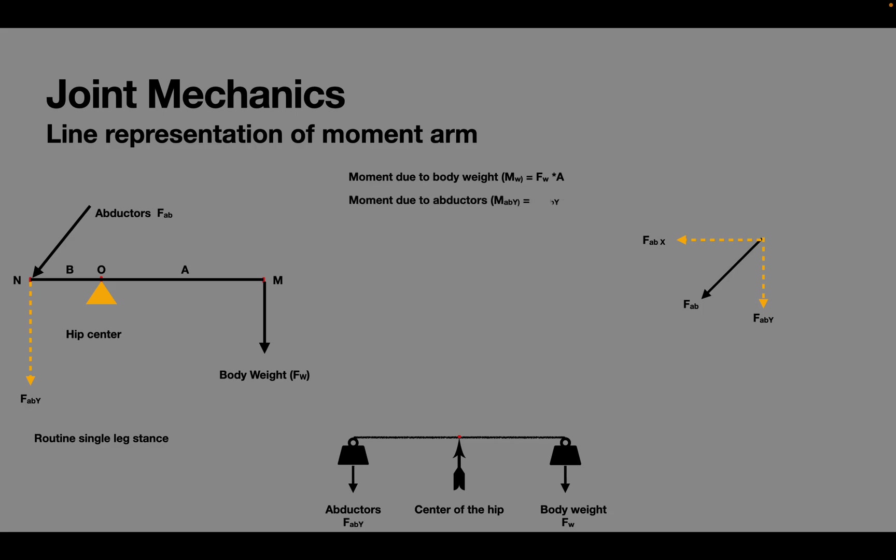At equilibrium the pelvis is horizontal and the moments are balanced and therefore moments due to abductors and the body weight are equal. Expanding this we can calculate the abductor force by multiplying Fw and A and dividing it by B.